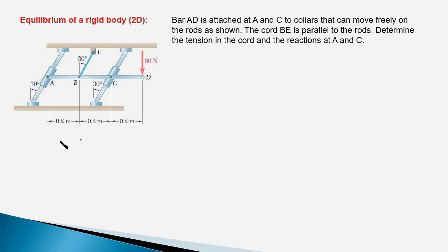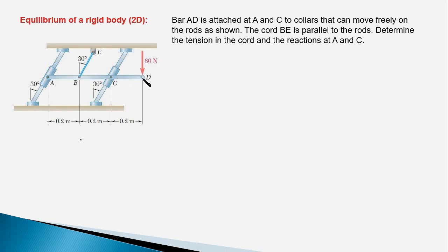In the first problem, we have a bar AD which is attached to collars at C and A. These collars can move freely along the rods. The point B of the bar is connected to a chord BE, which is parallel to the rods. The bar AD is subjected to a force of 18 N at point D and it is in equilibrium. We have to find the tension in chord BE and the support reactions at A and C.